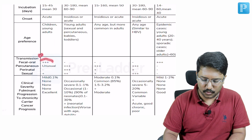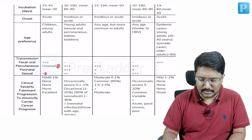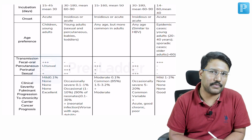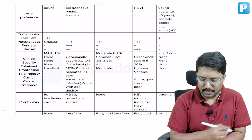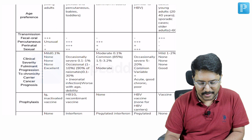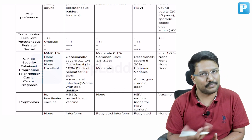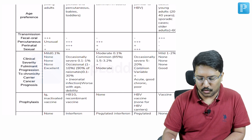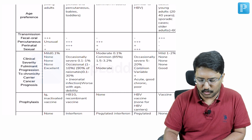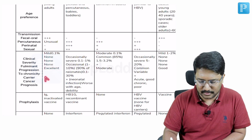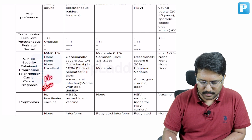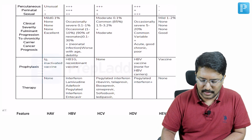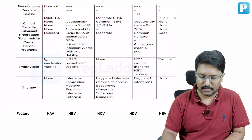Transmission is mostly via the feco-oral route; percutaneous route is unusual, and sexual transmission carries only a theoretical risk. In terms of clinical severity, it is generally mild — fulminant liver failure is unusual. The prognosis is generally excellent and there is no chronicity risk. For prophylaxis, we do have a vaccine for hepatitis A, and antivirals are generally not warranted.